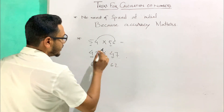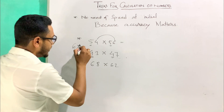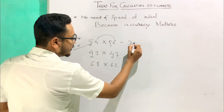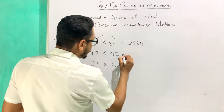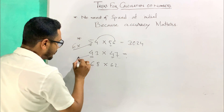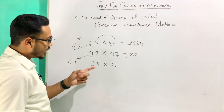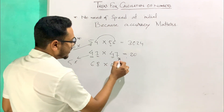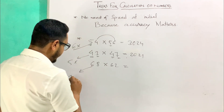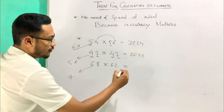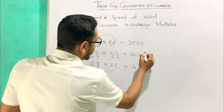So how do we solve those numbers? For 54 times 56: the successor of 5 is 6, so 5 times 6 is 30. Then I directly multiply the dissimilar units: 6 times 4 is 24, giving 3024. For 43 times 47: the successor of 4 is 5, so 4 times 5 is 20. Then 3 times 7 is 21, giving 2021. For 68 times 62: the successor of 6 is 7, so 7 times 6 is 42. Then 8 times 2 is 16, giving 4216.